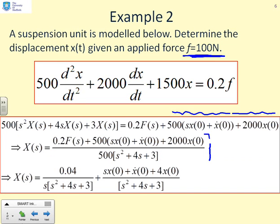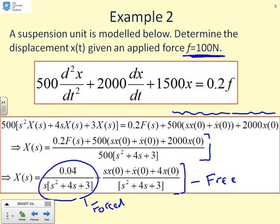Now I'm going to rearrange this to solve for X(s). So you'll see that's all I've done here in a straightforward fashion. 0.2f(s) plus 500sx(0) plus x dot of 0 plus 2000x(0) all divided by 500s² plus 4s plus 3. And then again, what I've done as on the previous page, I've separated it into a forced bit. So the bit that depends on the applied force. And then this bit here, the bit that depends on the initial conditions, which is the free. And in many cases, you'll be given zero initial conditions, and that will make that second bit disappear.